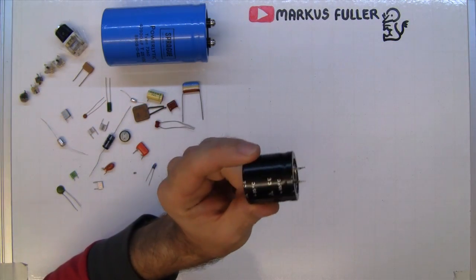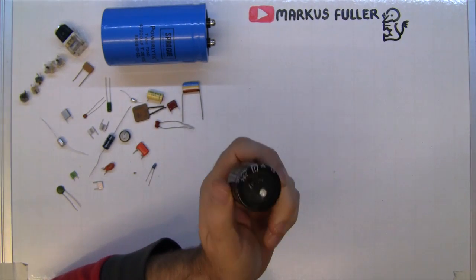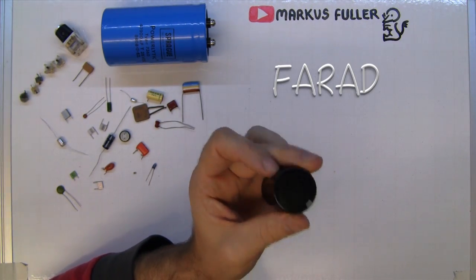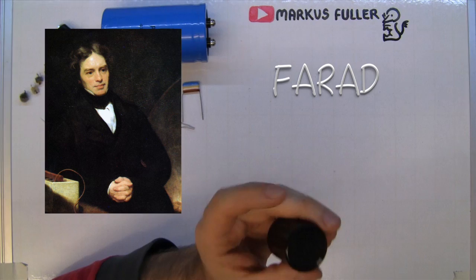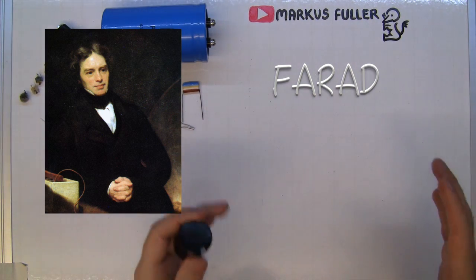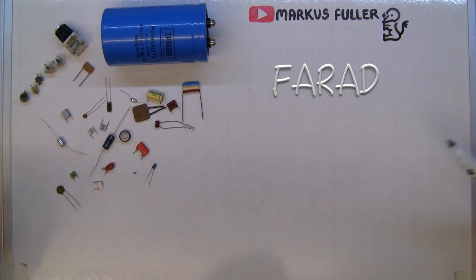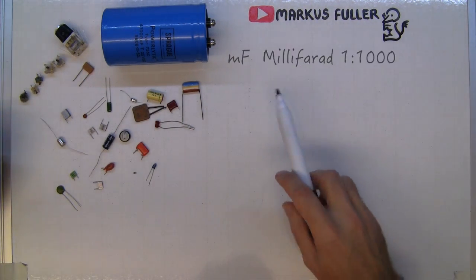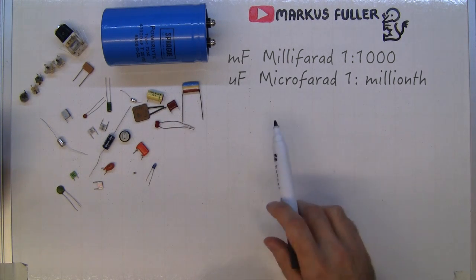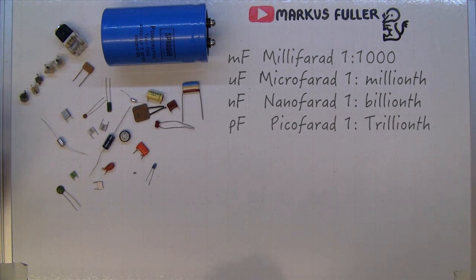A capacitor is a component that can store an electrical charge and the unit of measurement is the farad, after Michael Faraday. One farad is quite big so you would normally find millifarads, microfarads, nanofarads or even picofarads which are one trillionth of a farad.